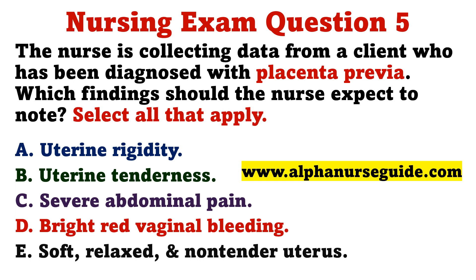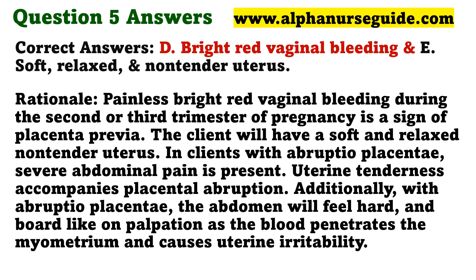The nurse is collecting data from a client who has been diagnosed with placenta previa. Which findings should the nurse expect to note? Select all that apply. A) Uterine rigidity. B) Uterine tenderness. C) Severe abdominal pain. D) Bright red vaginal bleeding. E) Soft, relaxed, and non-tender uterus. The correct answers are D and E.